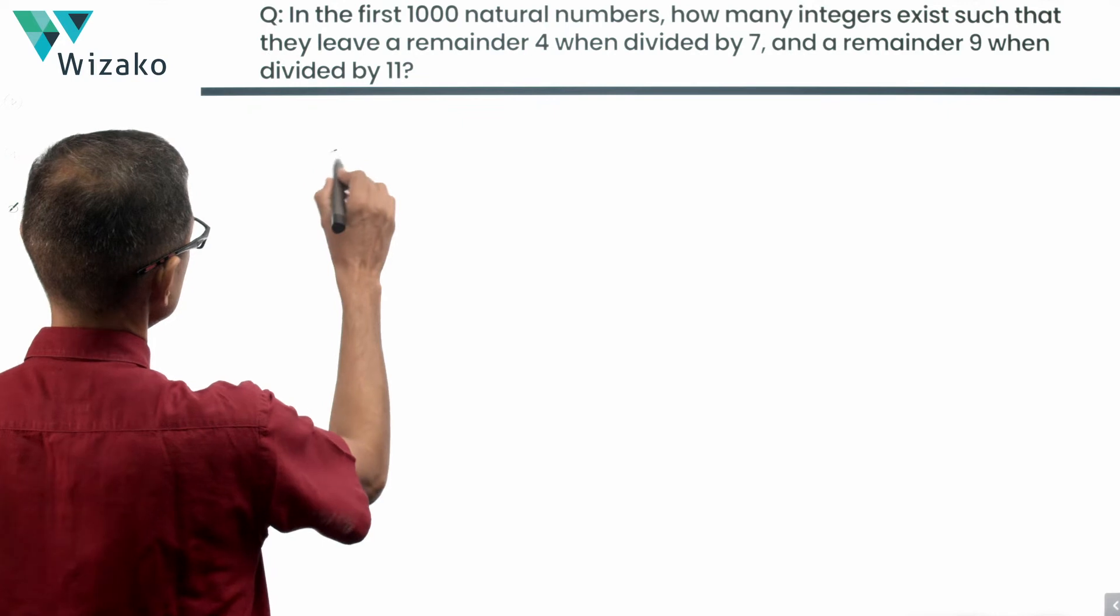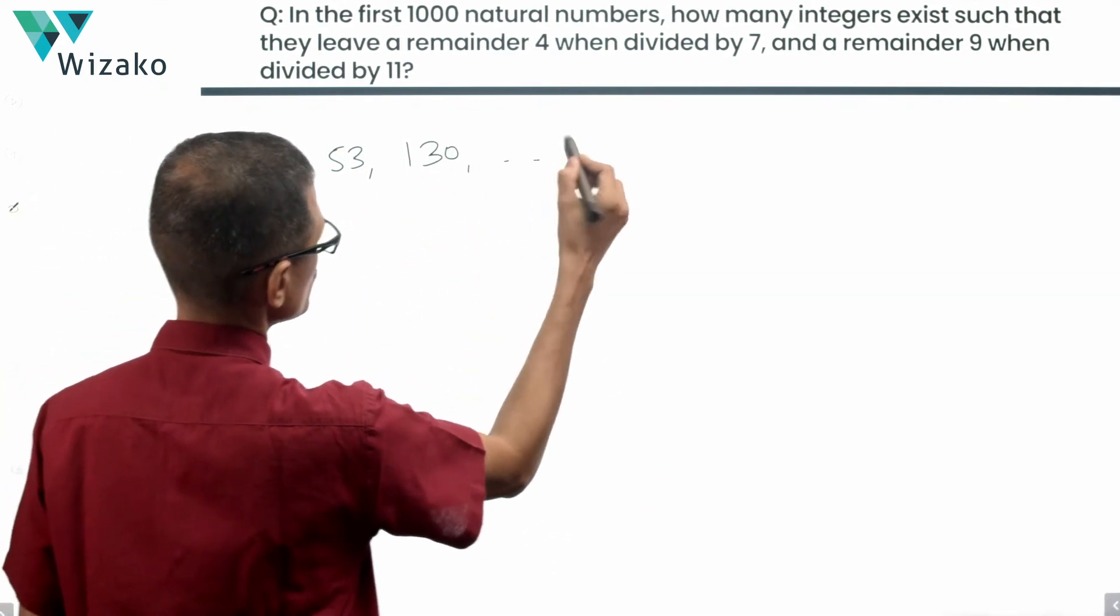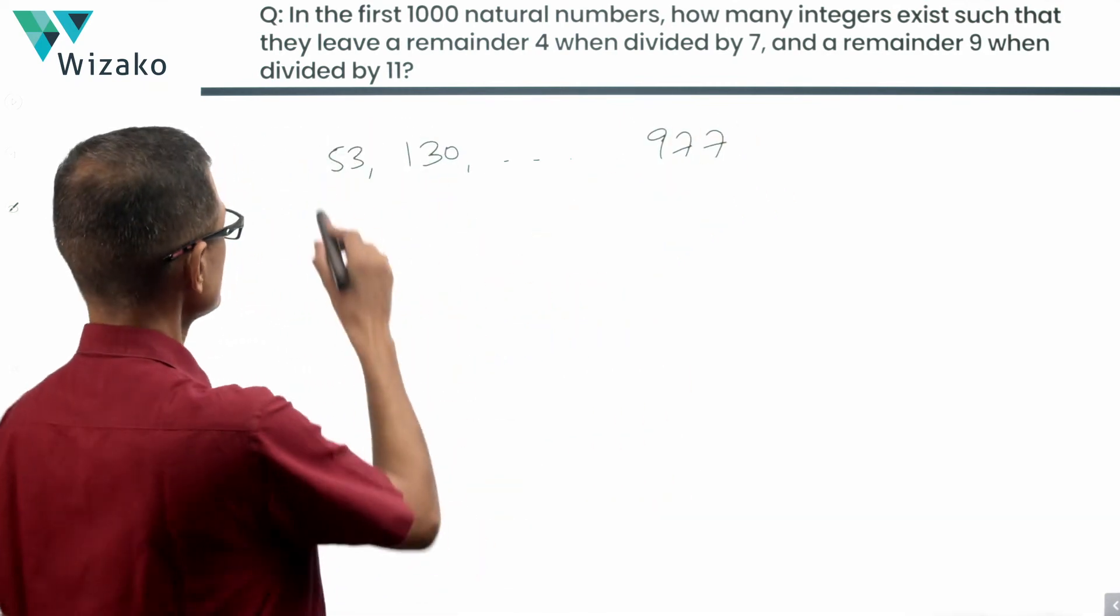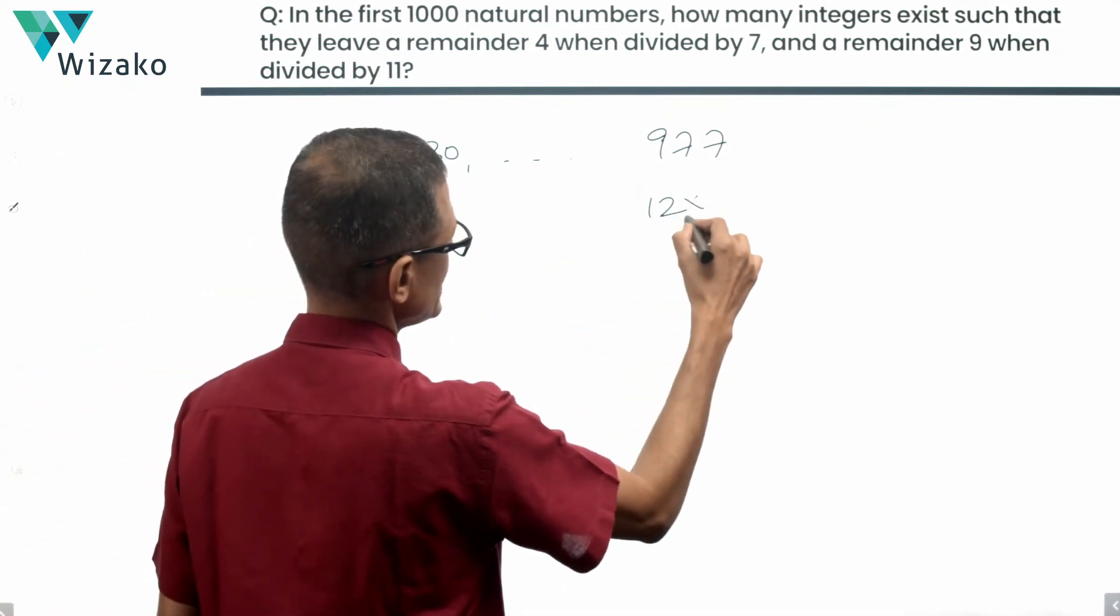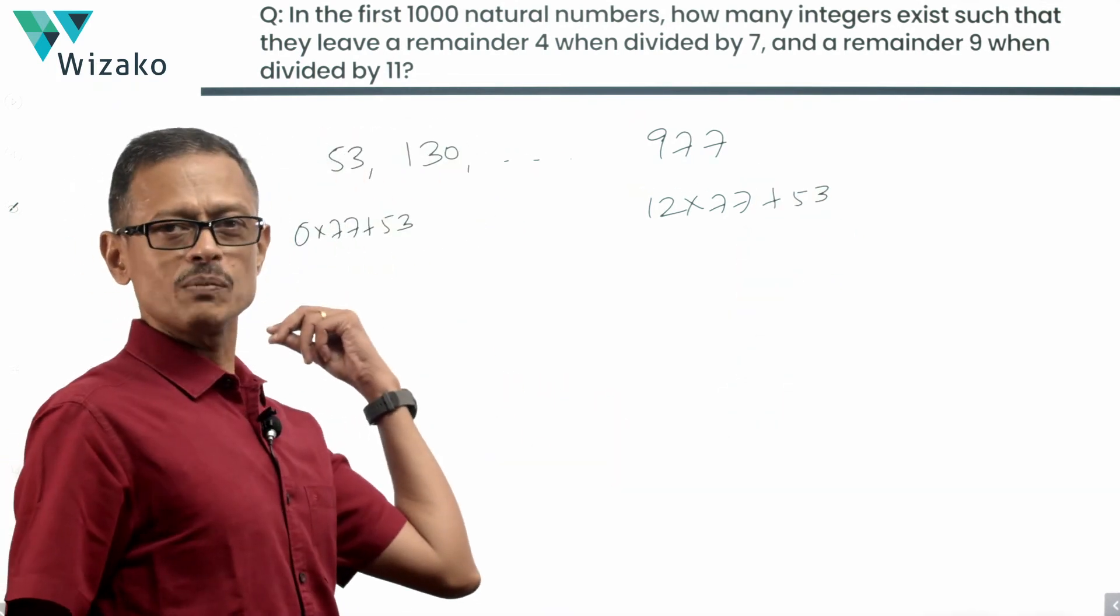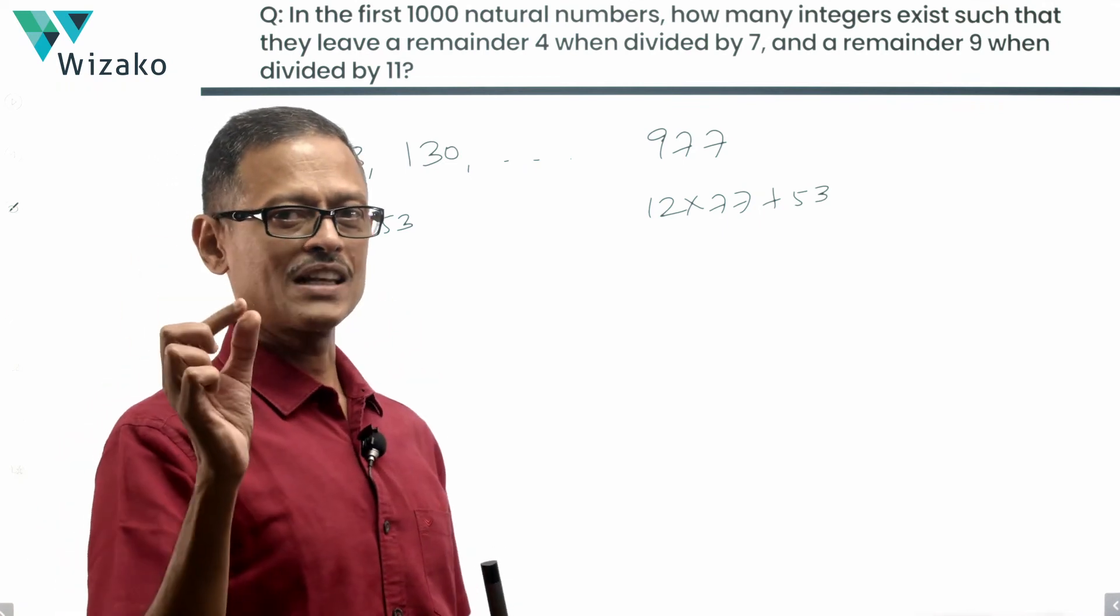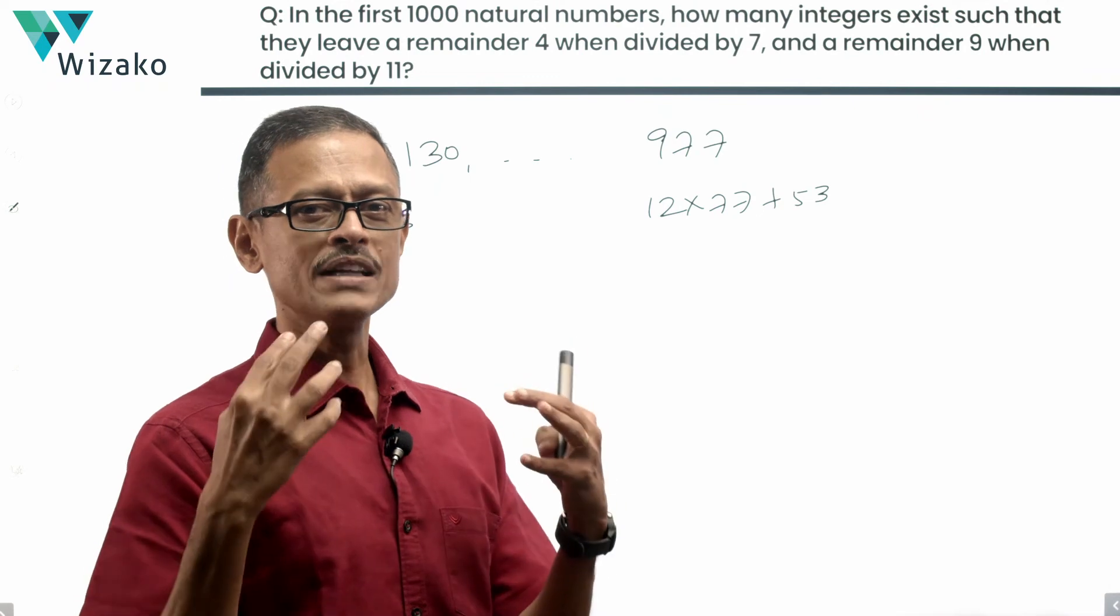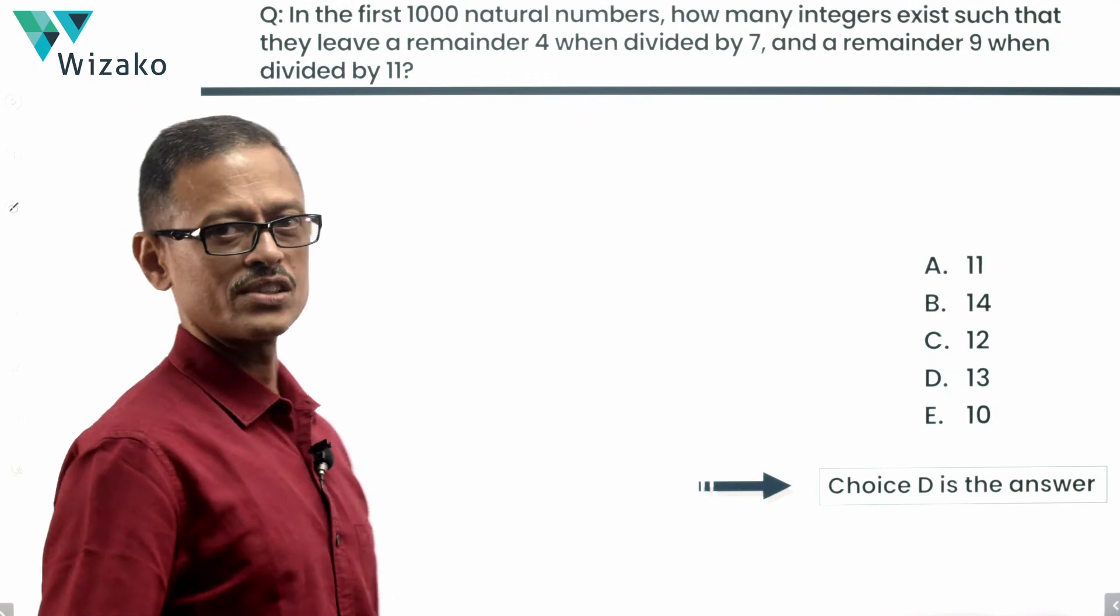So we are starting with 53 and then we are adding 77 to each. That's going to be the next term will be 130. So on and so forth and end up at 977. This is 0 into 77 plus 53. This is 12 into 77 plus 53. So we are starting with the 0th multiple of 77. Going all the way up to the 12th multiple of 77. So 1 to 12 is 12 numbers. Add 0 which also has to be counted. Makes it 13 numbers. So how many such numbers exist? We have 13 such numbers in the sequence. 13 choice. D is the correct answer to the question.